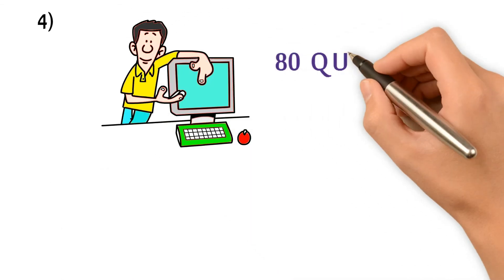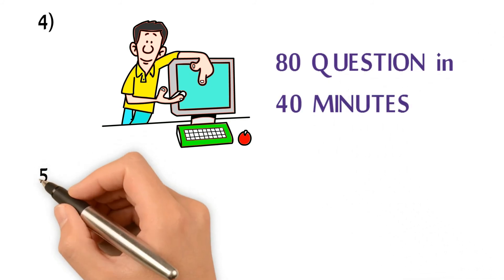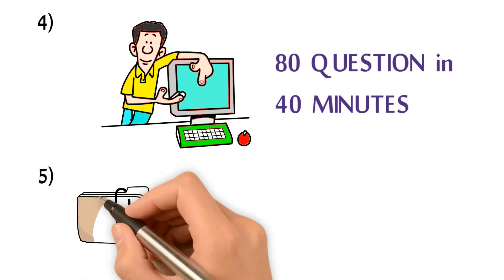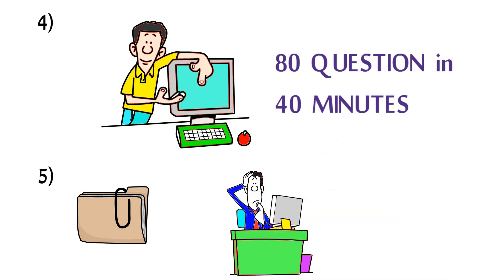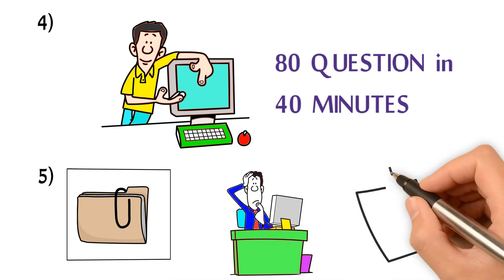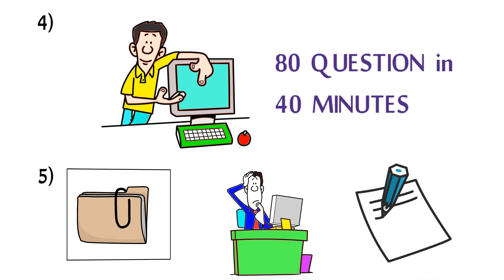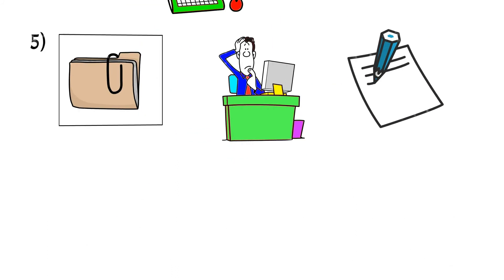Four, try to answer all 80 questions in the first 40 minutes. Five, bookmark the questions that you are not sure the correct answers, if the bookmark function is available on the exam. If not, write down the question numbers with unsure answers on a piece of paper for later review.